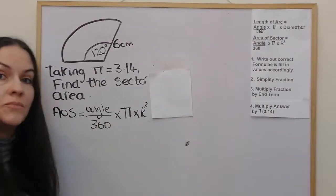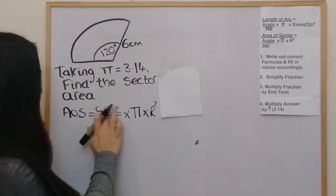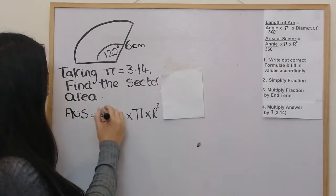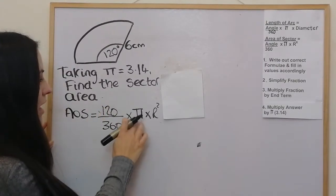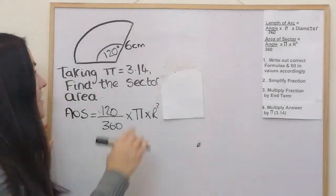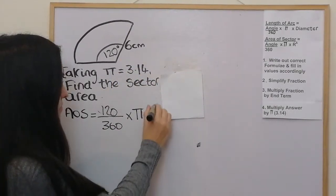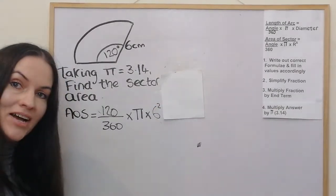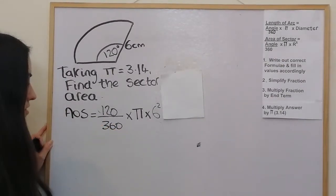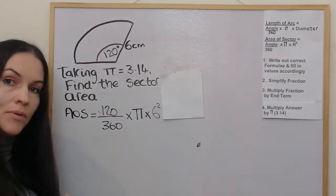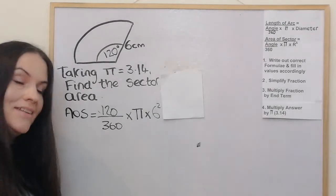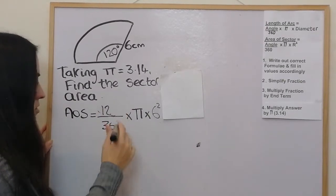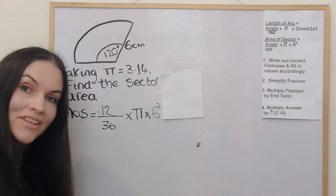We substitute the values in: the angle is 120 and we'll leave pi for now, and the radius is 6. The second step is to simplify the fraction, so we have 120 over 360. Both can divide by 10, giving 12 over 36, and that simplifies down to 1 over 3.